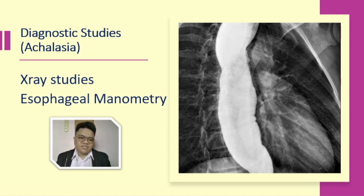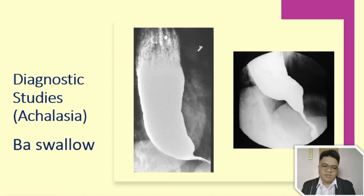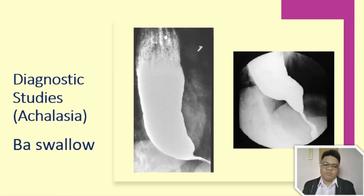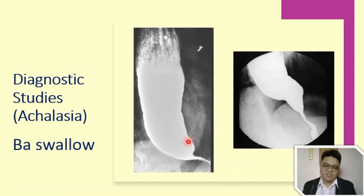For diagnostic studies, achalasia would involve the use of x-ray and esophageal manometry — manometry being the measure of pressure. This also shows a barium swallow, where the patient swallows barium and series of x-rays are taken using fluoroscopy. The classic finding is what we refer to as the bird beak narrowing, which is classic for achalasia. Other references call it a rat's tail appearance. Either way, it is the classic imaging finding in achalasia.